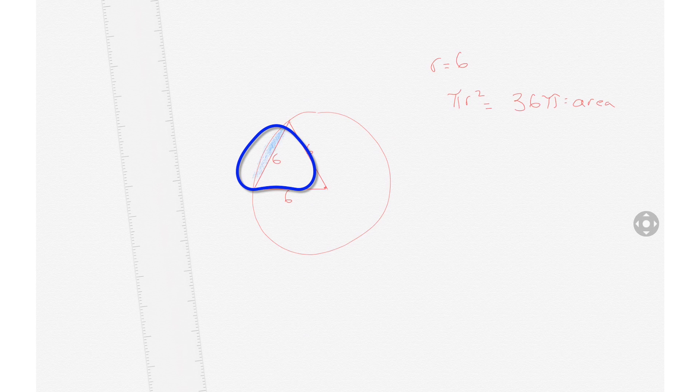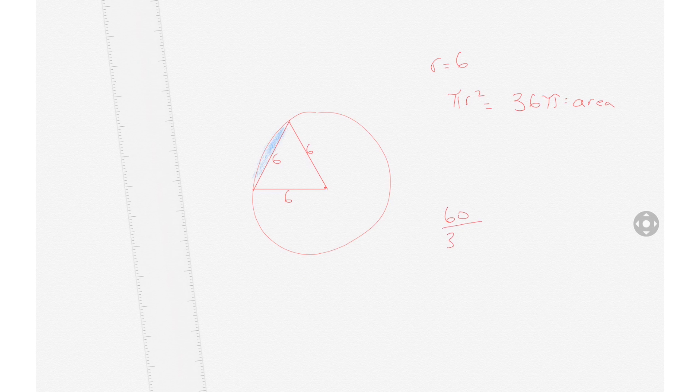And that ratio is the angle over 360 equals the area of that section divided by the area of the whole circle. So we have 60 degrees divided by 360 equals the area of the section divided by 36 pi, which is the area of the whole circle.